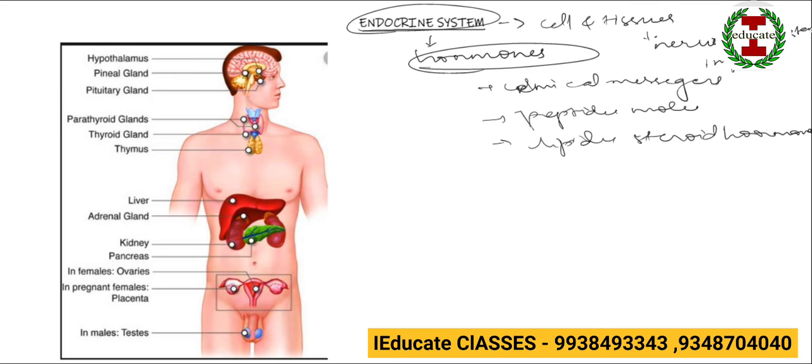So the hormones are basically categorized into four categories. First is the amino acid derivative hormone. Second is the peptide hormone. Third are the protein hormones. All of these come under the category of water soluble hormones. Last comes the steroid hormone which is lipid soluble hormone.